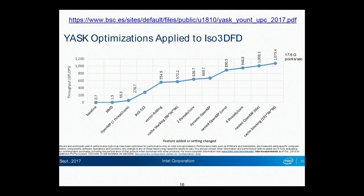This was a plot done by Chuck, which is quite useful. You can see vector folding was a key optimization done in Yask, and it delivered nearly a doubling in performance. You can also see all the other standard optimizations.